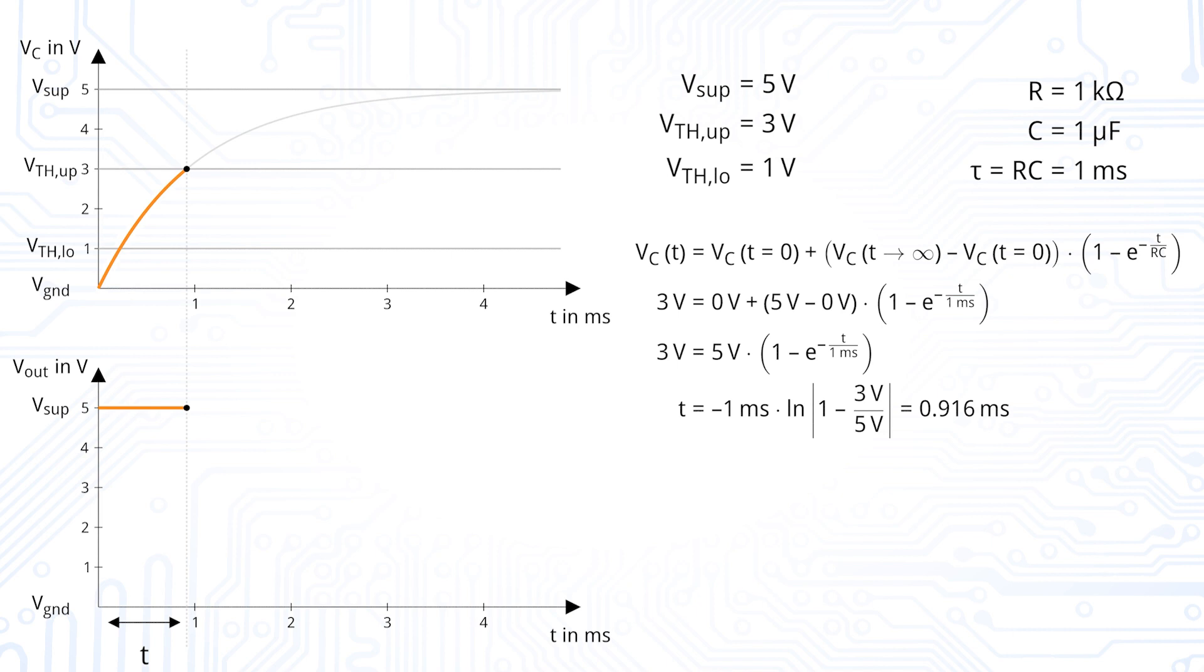For the discharging, we are starting at the upper threshold voltage and the RC structure is tending towards the lower supply voltage, which is 0V.